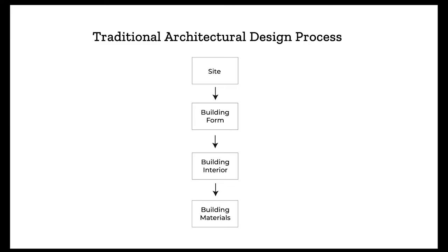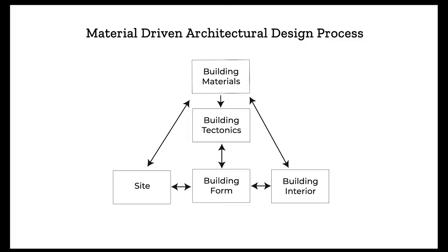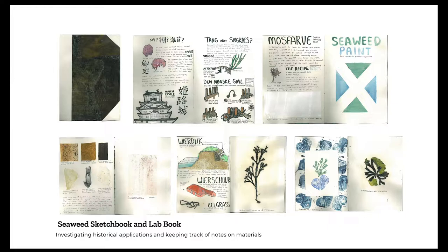Typically in the traditional architectural design process we start very large scale from a site level, funneling into the building form and its shape. From there we think about building interior and building materials lastly. With material-driven design, my process went quite differently — starting with the materials first, informing the tectonics but also informing the choice of site, building form, and building interior. This created a completely interconnected design process where the materials were relating to and informing all different aspects.